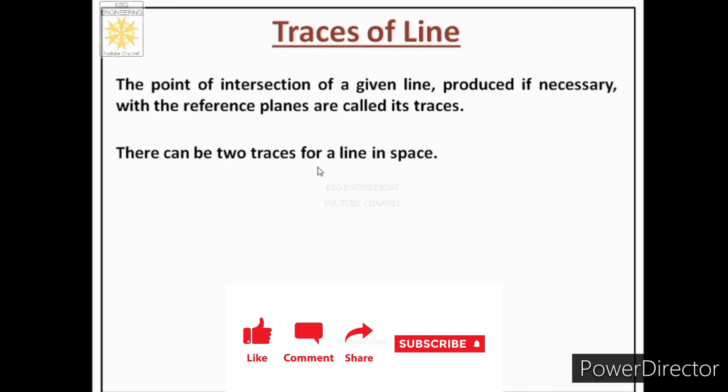There can be two traces for a line in space. The first one is called horizontal trace. Second is vertical trace.